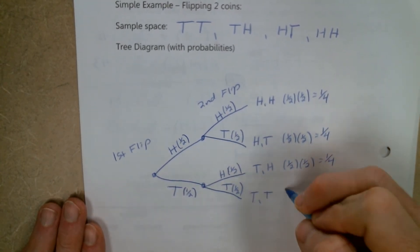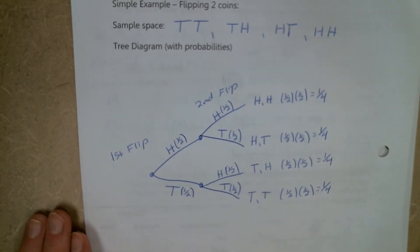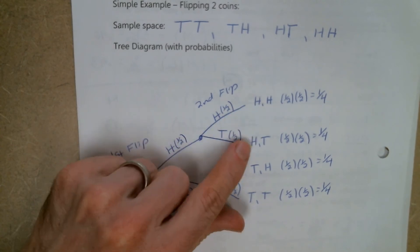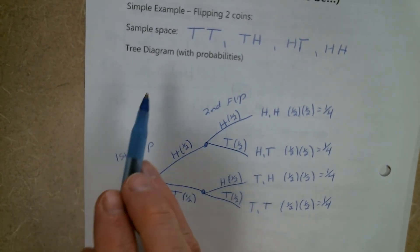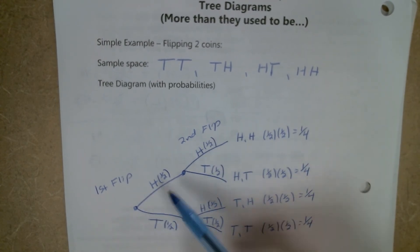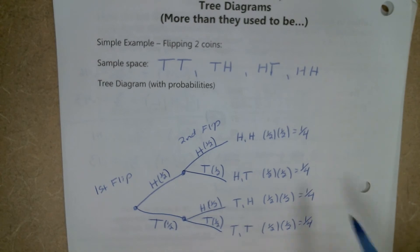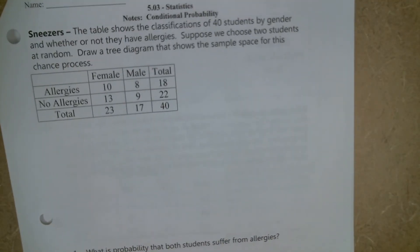We can see the odds of each scenario by going along the branches and multiplying the probabilities. The odds of ending up heads-heads is 1/2 times 1/2, or 1/4. Same for head-tails, tails-heads, and tails-tails — all 1/4. The tree has four endpoints representing our sample space, and we get probabilities by multiplying individual probabilities along the branches.